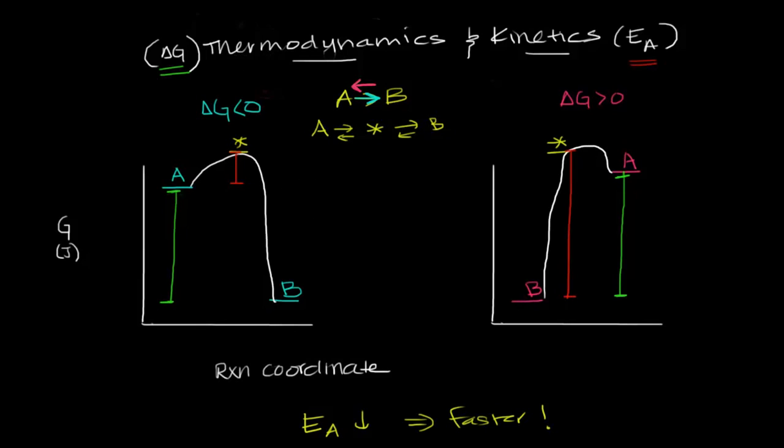This is why our bodies have enzymes, which essentially lower the activation energy of a reaction. So I went ahead and drew a dotted white line that's a little bit lower. So you can see that when an enzyme is present, the height of the barrier has decreased. And if it's decreased, the reaction will proceed faster.